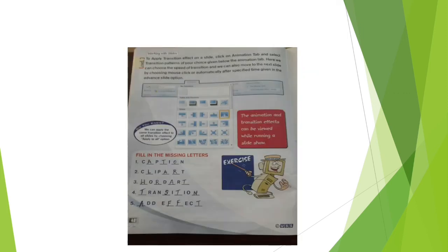For transition effects on a slide, click on the Animation tab and select transition patterns of your choice. You can choose the speed of transition and move to the next slide by mouse click or automatically after a specified time using the Advanced Slide option. Transition effects such as fades, dissolves, and wipes can be viewed by running a slideshow.